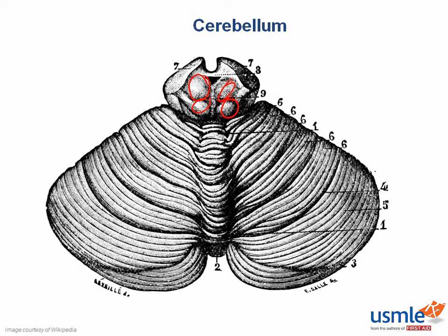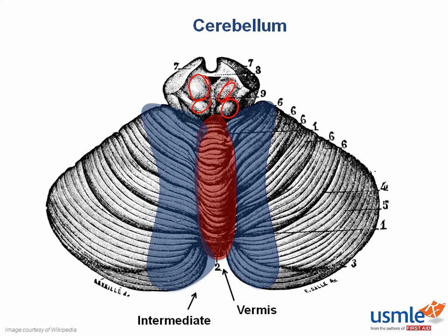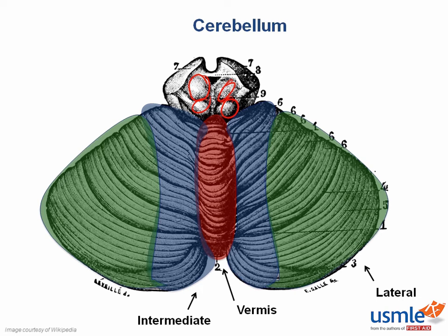The cerebellum's anatomic divisions include the midline vermis, which mediates truncal coordination; the intermediate parts, which mediate limb coordination; and the lateral parts, which mediate voluntary motor planning of the extremities using sensory information.